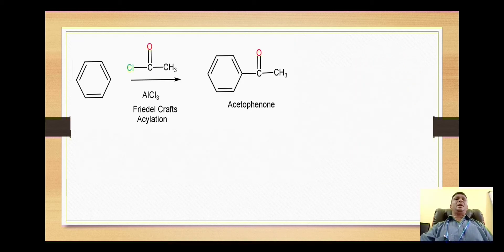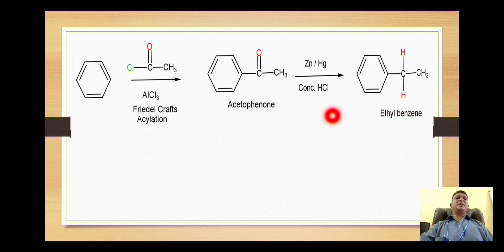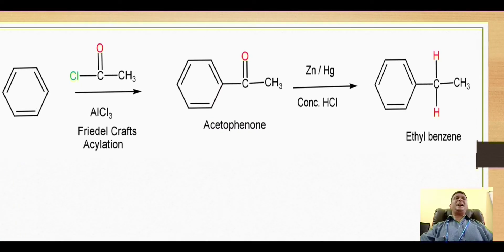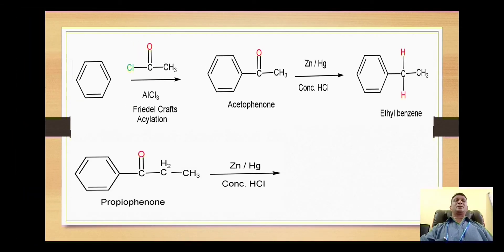For example, acetophenone, which is obtained by a Friedel-Crafts acylation reaction of benzene with acetyl chloride, on reaction with zinc amalgam and concentrated hydrochloric acid is converted to ethylbenzene. Here we can see that the doubly-bonded oxygen is replaced with two single bonds connected with hydrogen.